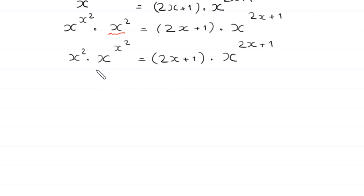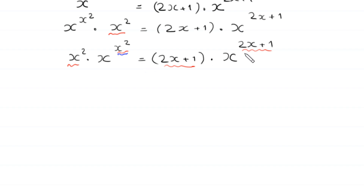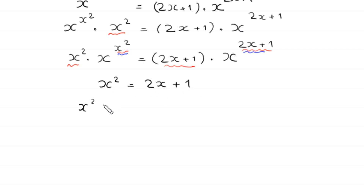Comparing the left-hand side with the right-hand side, we see that on the left side we have x squared times x to the power x squared, and on the right side we have 2x plus 1 times x to the power 2x plus 1. So we can write x squared equal to 2x plus 1. Moving 2x and plus 1 to the left side, this equation becomes x squared minus 2x minus 1 equals 0.